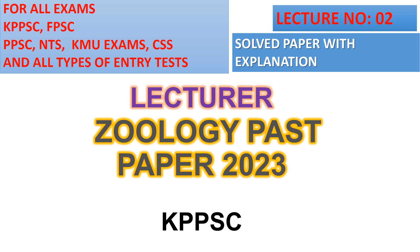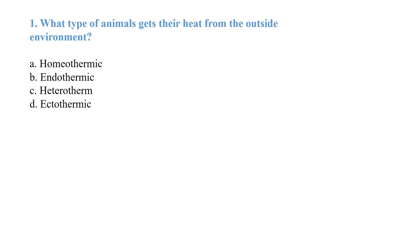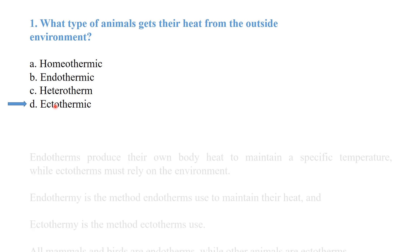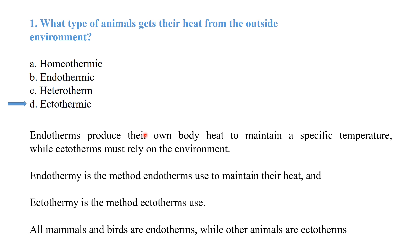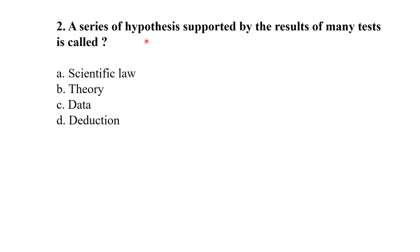KPSC 2023: The first MCQ asked what type of animals get their heat from the outside environment. The best answer was option D, ectothermic organisms. Endotherms produce their own body heat to maintain a specific temperature, while ectotherms rely on the environment. All mammals and birds are endotherms while other animals are ectotherms. A series of hypotheses supported by results of many tests is called a theory.